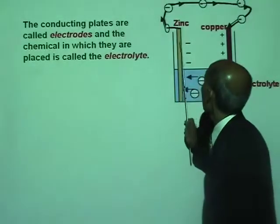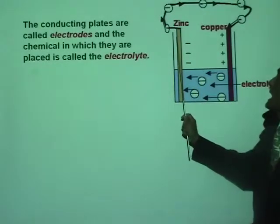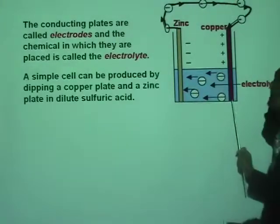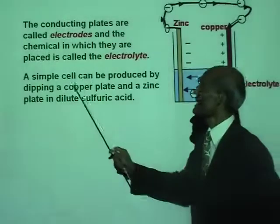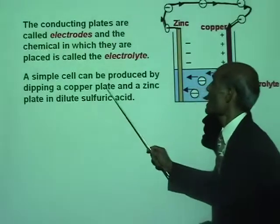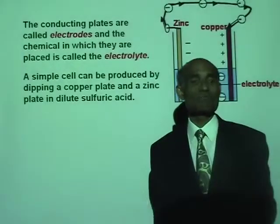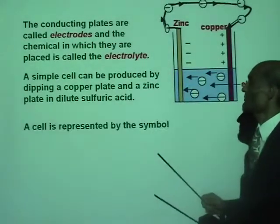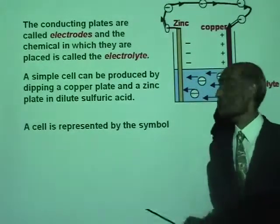The conducting plates are called electrodes — you have a copper electrode and a zinc electrode. The chemical is called an electrolyte. A simple cell can be produced by dipping a copper plate and a zinc plate in dilute sulfuric acid — that's what I just showed you.